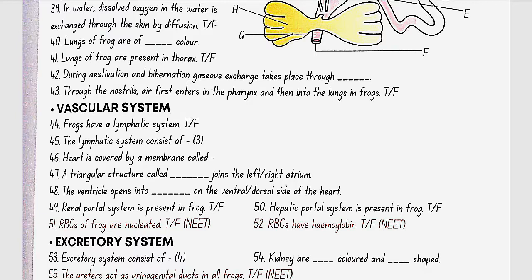Vascular system. Frogs have a lymphatic system. Yes, true. Lymphatic system consists of lymph, lymph channels and lymph nodes. Heart is covered by a membrane called pericardium. A triangular structure called the sinus venosus joins the right atrium. The ventricle opens into the conus arteriosus on the ventral side of the heart.